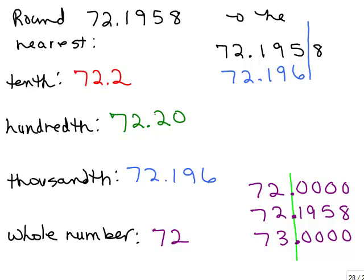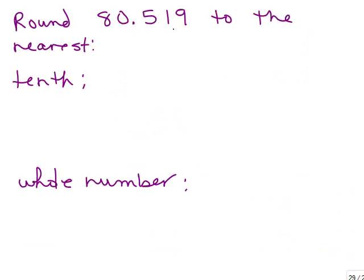I'm going to just do a couple more just to give you a slight bit more practice. 80.519. Let's round this to the nearest tenth and then to the nearest whole number. First let's do it to the nearest tenth. The tenth place is right here where the 5 is. So the question is do I keep it at 80.5 or do I go up to 80.6? And we look at this digit. It's a 1, so that means it does not go up. We want to keep it at 80.5.